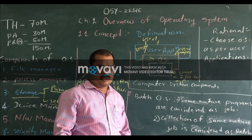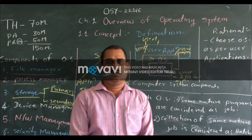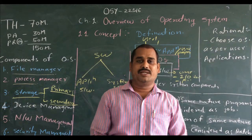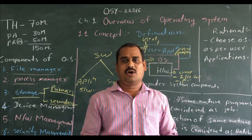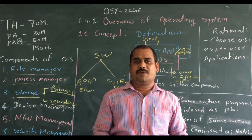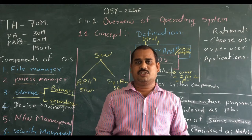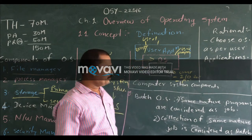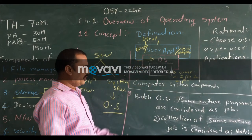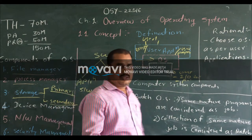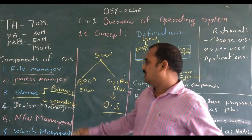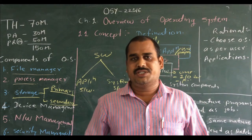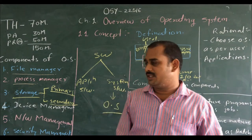Now we define the operating system in another way. The operating system is a software program which provides an efficient environment for executing the user's programs or user's applications efficiently. Now we consider the operating system components — which services or components are provided by the operating system.